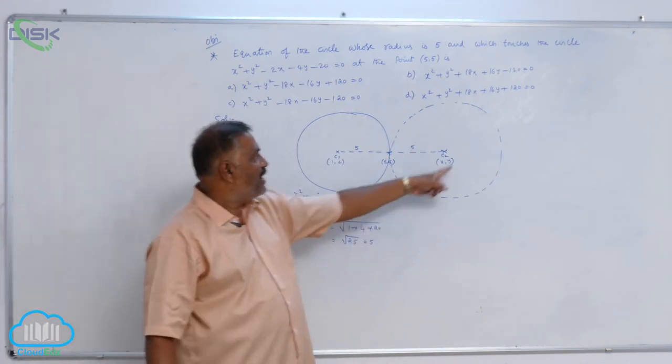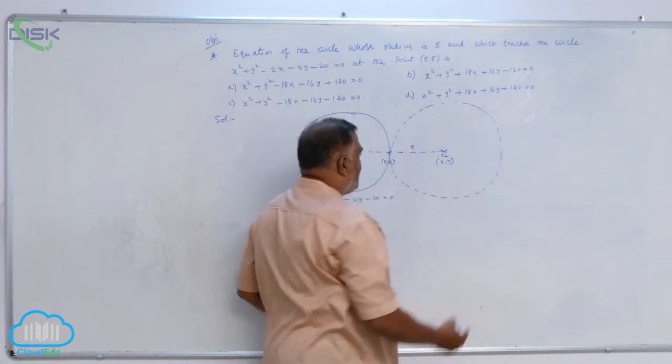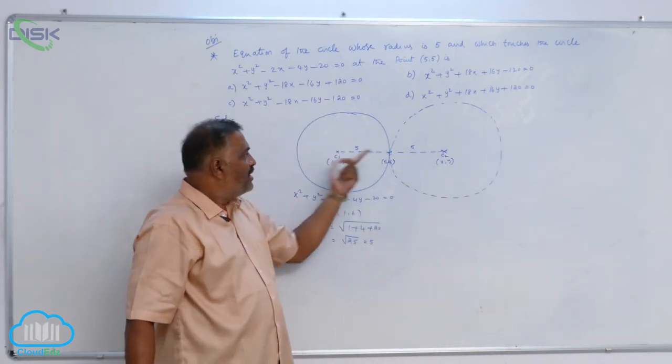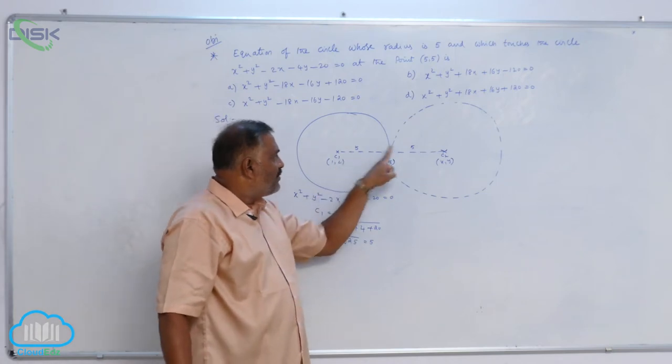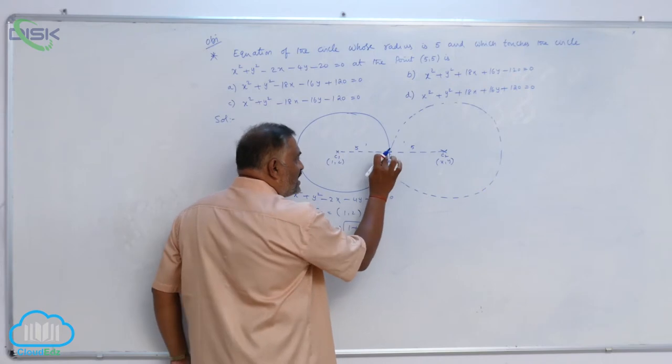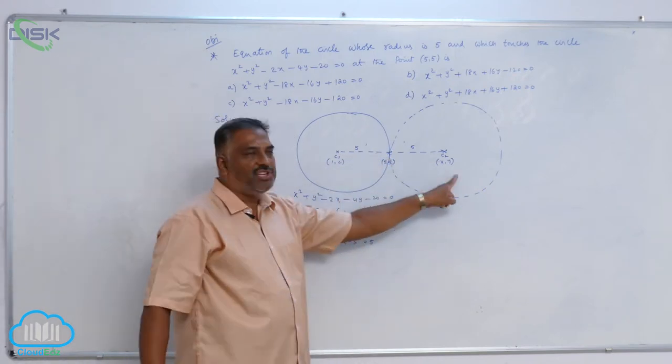Our target is to find out this circle equation, for which we require the value of (x, y), the center. And it is given that 5:5 is nothing but 1:1. That means this (5, 5) is the midpoint of these two centers.